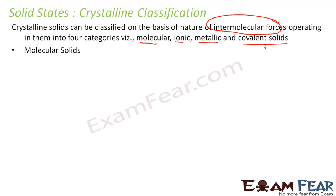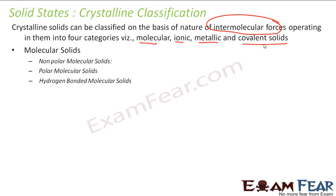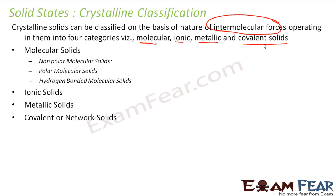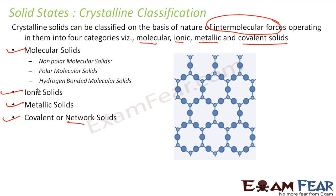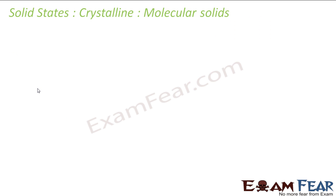Molecular solids are further classified into non-polar molecular solids, polar molecular solids, and hydrogen-bonded molecular solids. Ionic solids have no further classification, and metallic solids also have no further classification. Covalent solids are also called network solids. So the crystalline solids have four main types, and molecular solids are further classified into three different categories. Let's start with molecular solids.